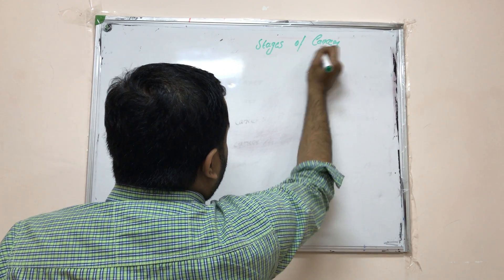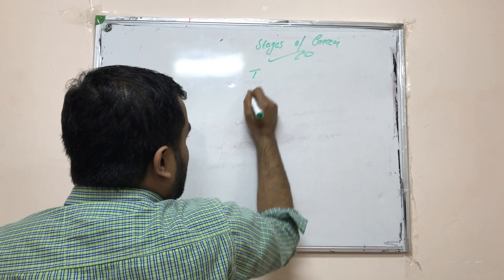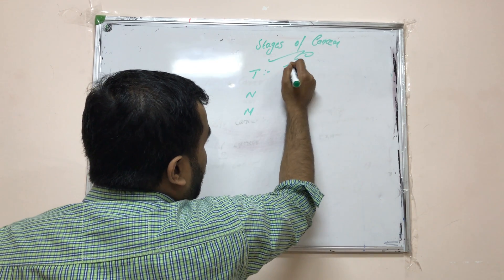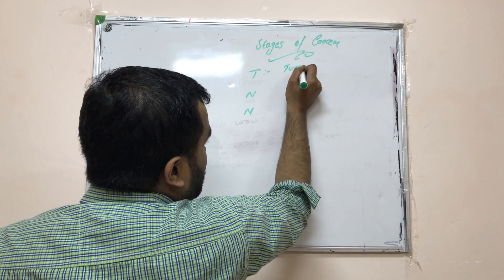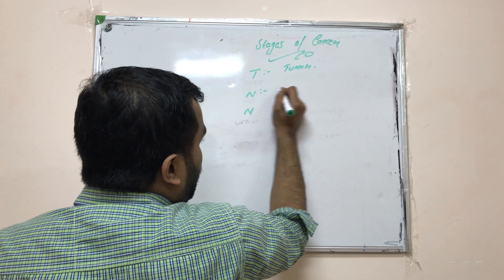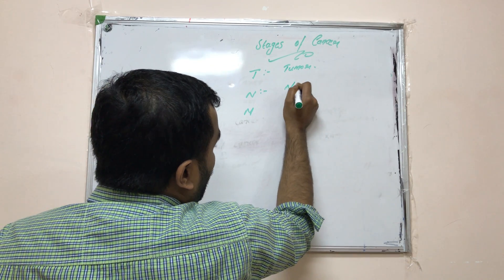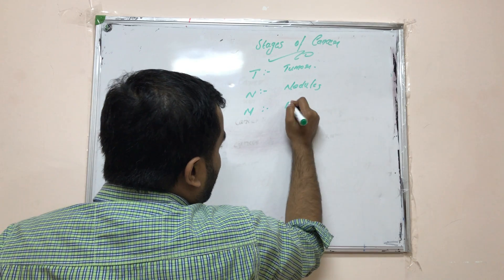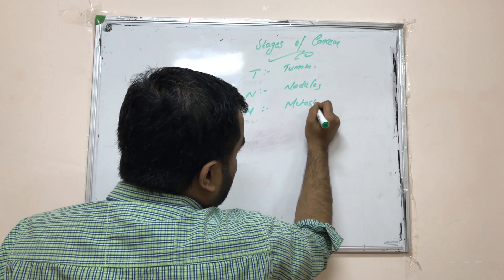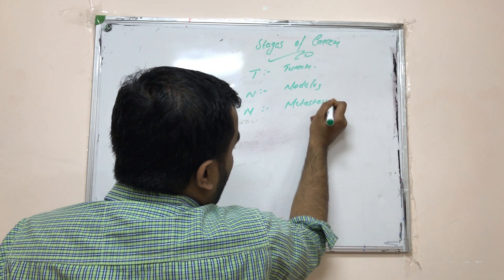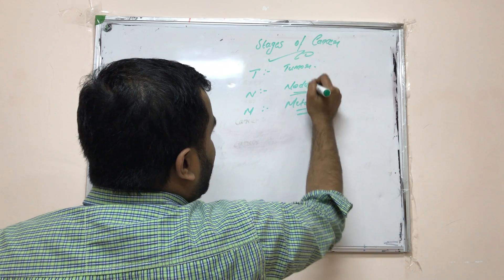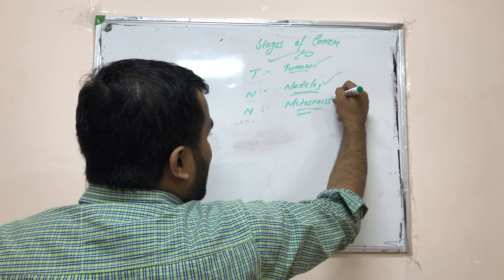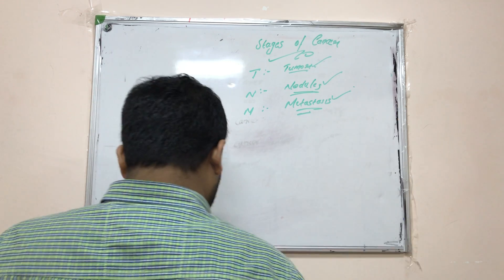There are three main stages of cancer: T, N, and M. First is tumor formation. Then nodules form. Then metastasis begins, which is the spreading to other regions. These are the three main important stages: tumor formation, nodules, and metastasis.